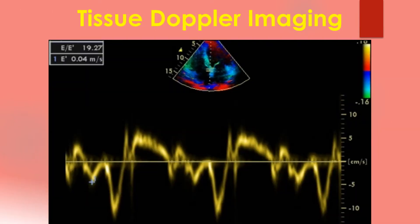While conventional Doppler images the velocity of blood, the same principle applied to the myocardium is known as tissue Doppler imaging. Tissue Doppler information overlaid on a two-dimensional image is known as colour kinesis, which can be seen in the inset at the top of this image.